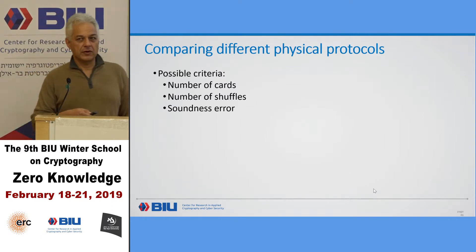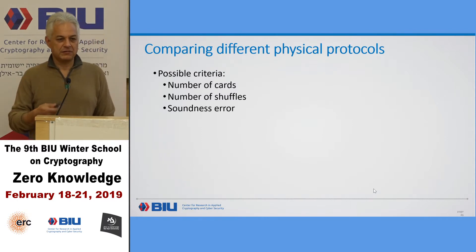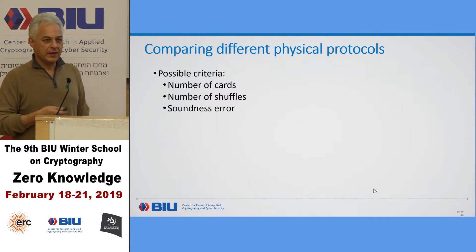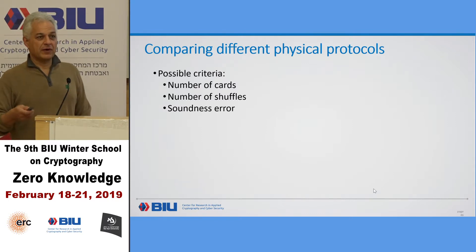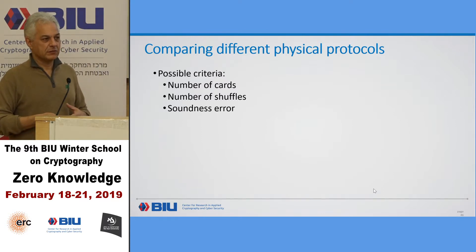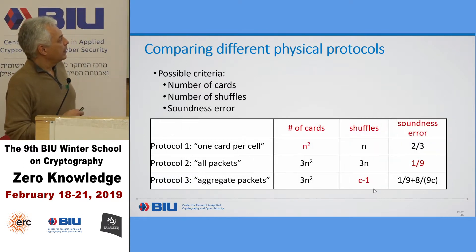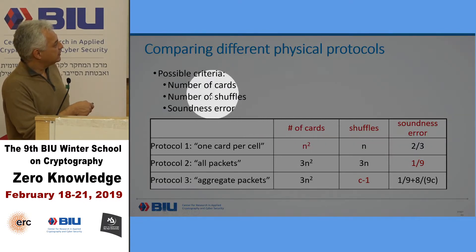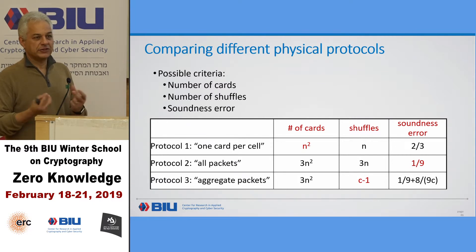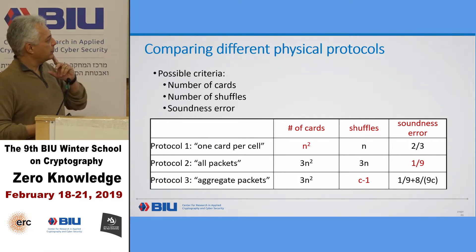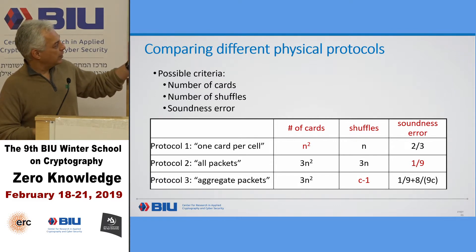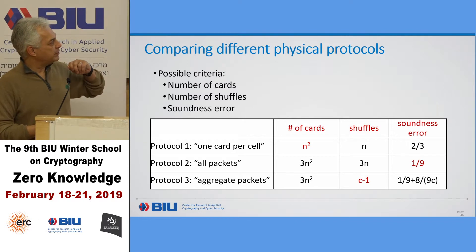When we look at this protocol as computer scientists, we start thinking about different measurements. One is the number of cards — we'd like it to be small. Another is the number of shuffles users have to do, because shuffles are hard. And then the soundness error, because we want the cheating probability to be small. This first protocol uses N² cards (like 9²), does 9 shuffles — one for each row — and has soundness error 2 over 3. We then came up with better protocols that do fewer shuffles and have a much better soundness error.